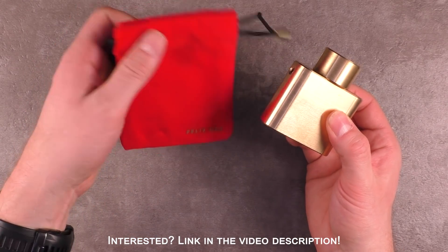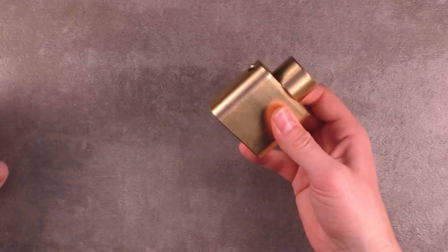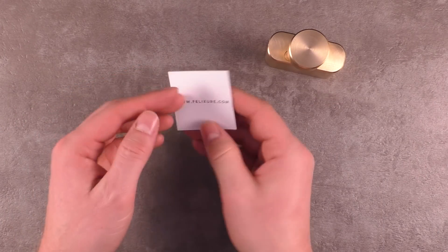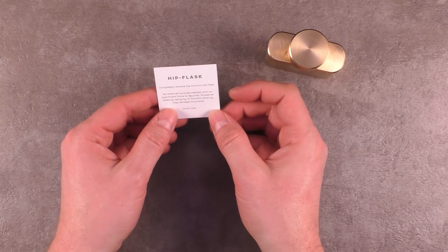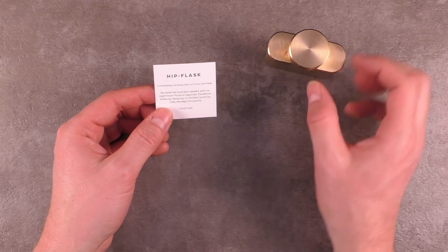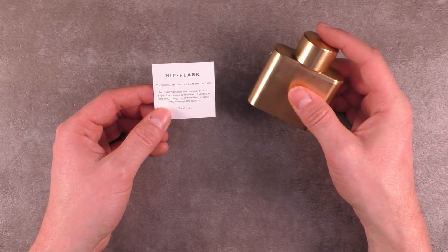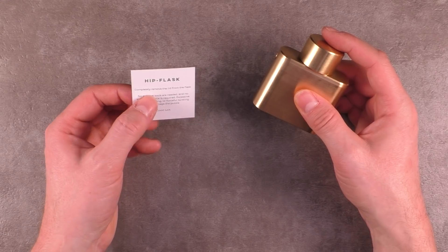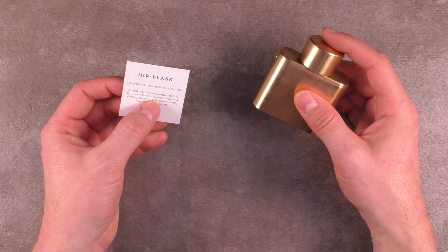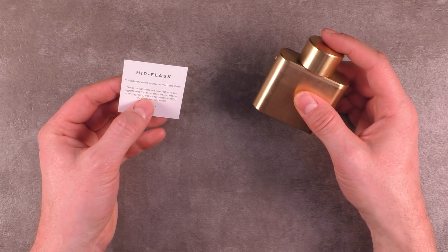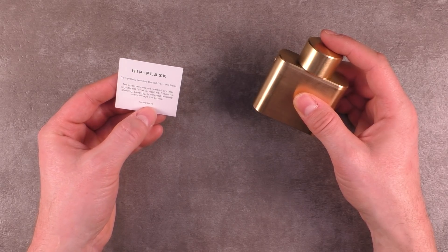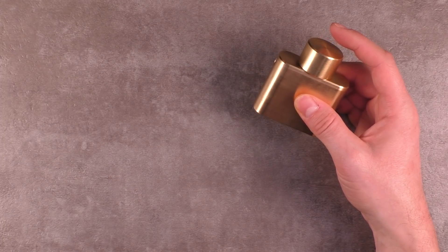Comes in this nice looking red bag. It comes also with some rules and these are the instructions which say the target of this puzzle is to remove the lid from the flask. No external tools are needed and no significant forces required. Excessive shaking, banging, or forceful twisting may damage the puzzle. Good luck!